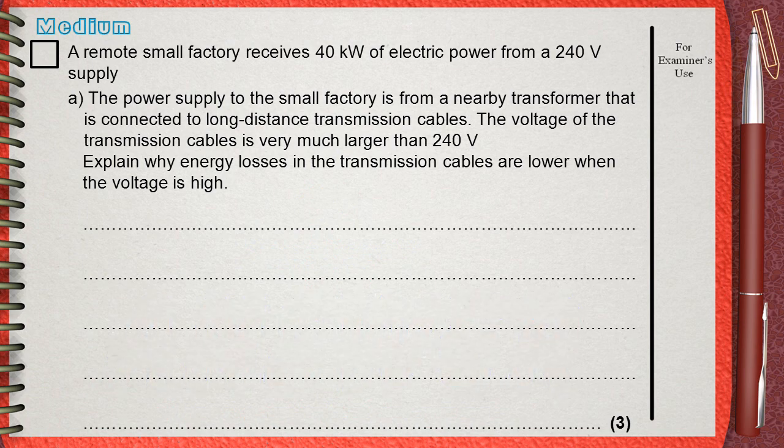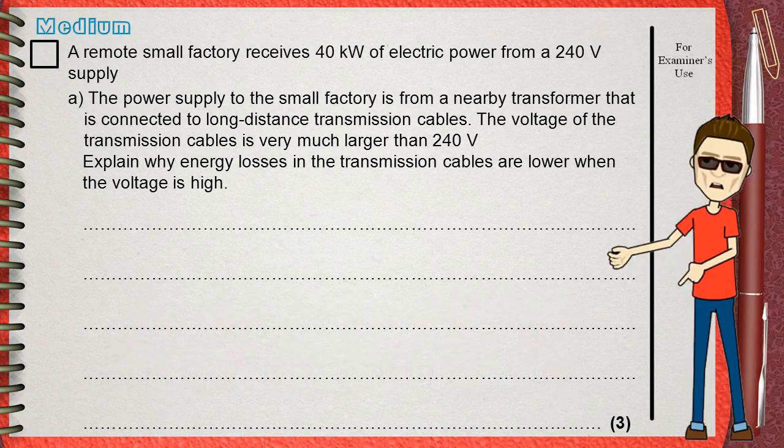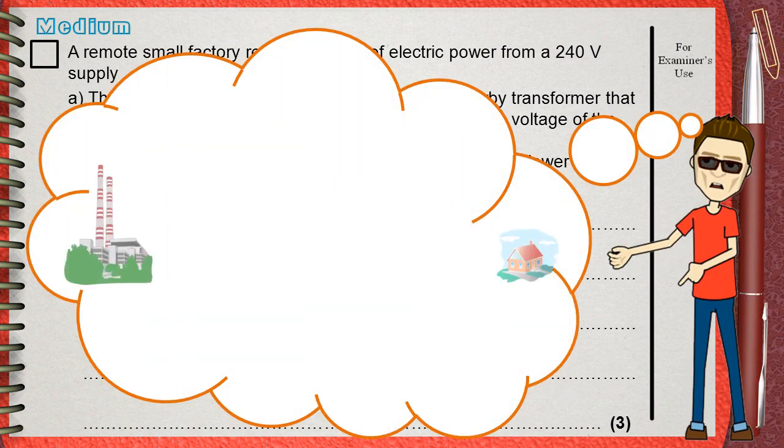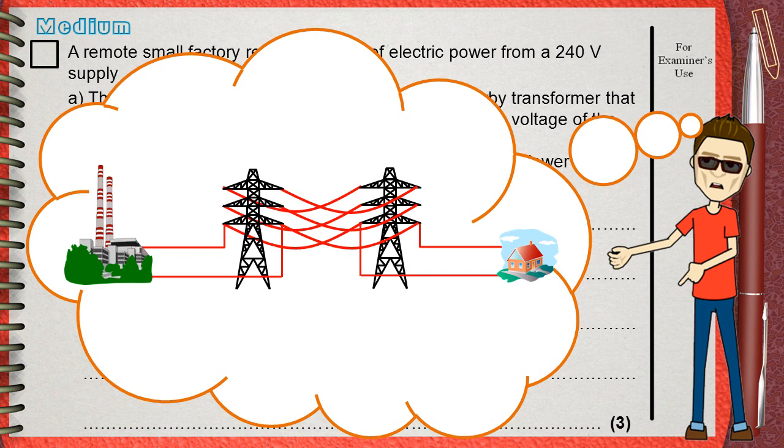To answer this question, we must first understand how electric energy is transmitted. On your left, this is a power station that produces electric energy. On your right, this is the consumer. Between the power station and the consumer, there are the transmission cables.